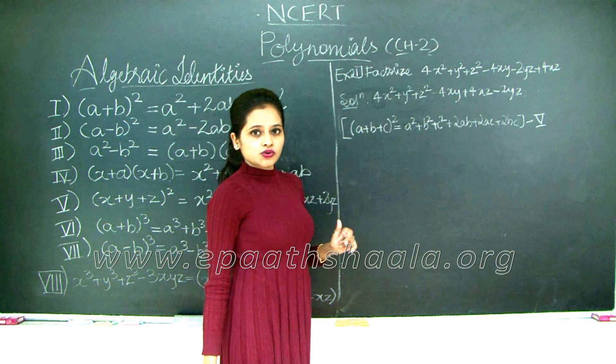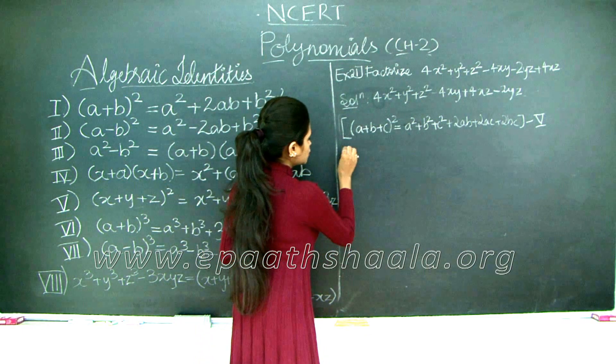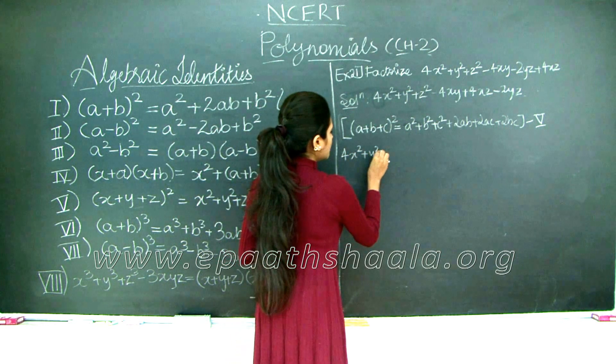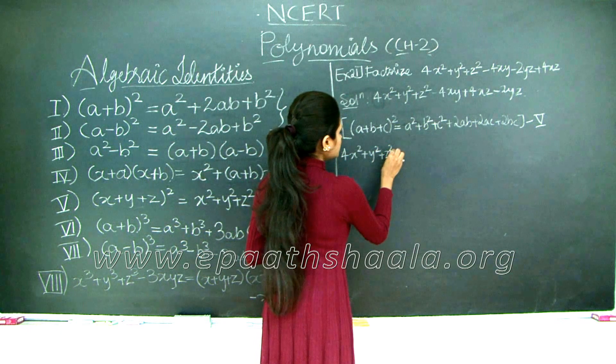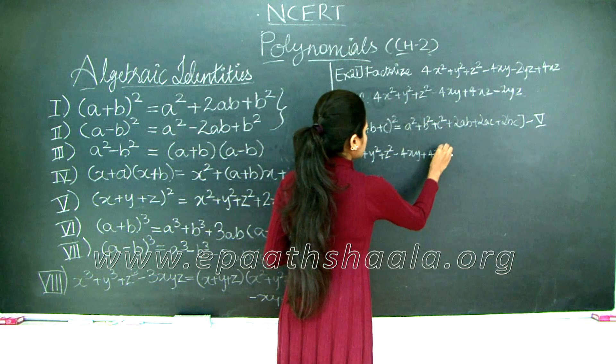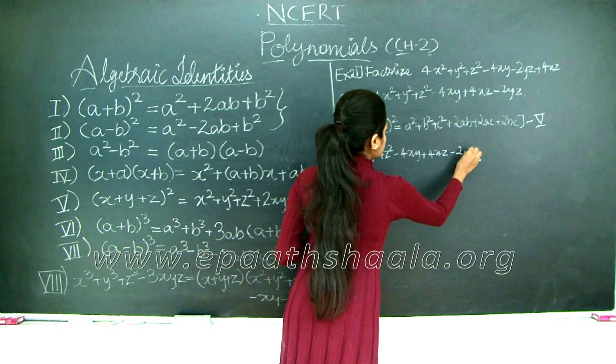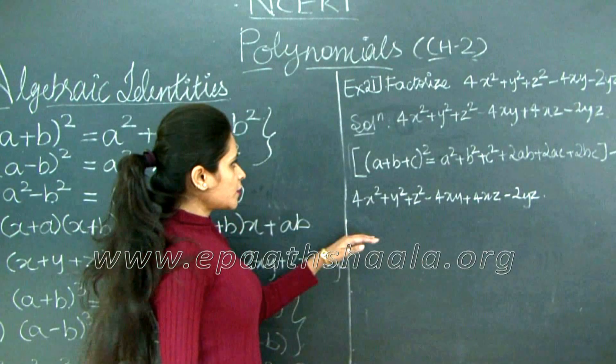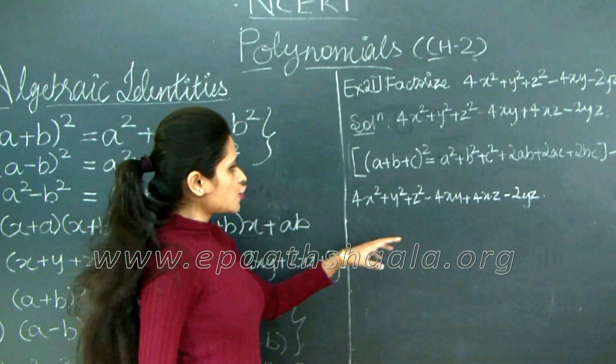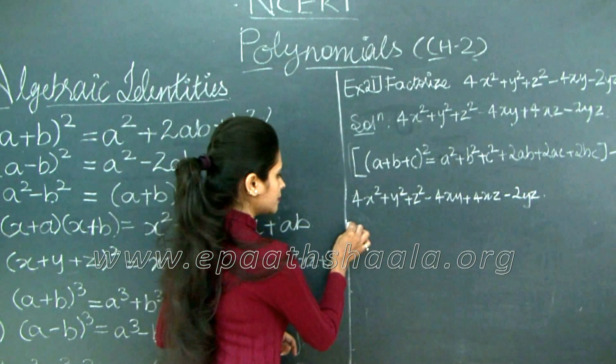4 can be written as 2 square. So now that we have written the sum in the form of identity 5, let's just go and simplify. Do not worry about the negative signs. We will take care of that as we proceed further.